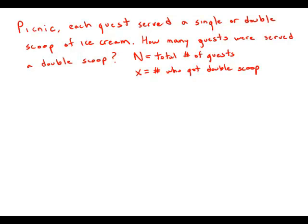At a certain picnic, each of the guests was served either a single scoop or a double scoop of ice cream. How many guests were served a double scoop of ice cream? I created two variables: n to be the total number of guests, and x to be the number who got a double scoop. X is what the question is actually looking for, but we suspect that n is going to be helpful in answering this question as well.